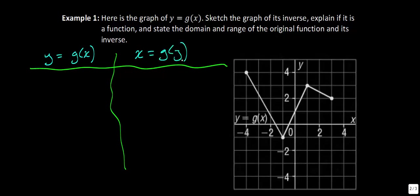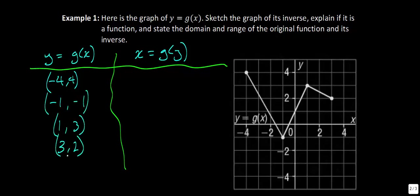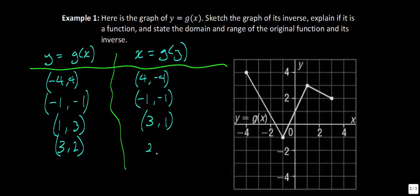Let's work from left to right with the given ordered pairs — it looks like there are four. The first is at (−4, 4), the next is (−1, −1), then (1, 3), and (3, 2). Very quickly, you just switch the ordered pairs: (4, −4), (−1, −1) — that's a common point, so it stays the same — then (3, 1) and (2, 3).